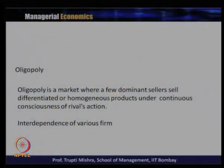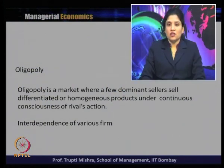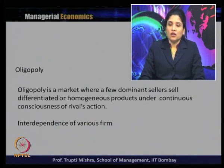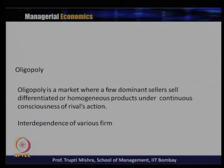Oligopoly is a market with few sellers where they produce either differentiated or homogenous products under continuous consciousness of rival action. The main significant feature of oligopoly is few dominant sellers under continuous consciousness of rival reaction. Whether they produce differentiated or homogenous products, the price and output decision is always decided in relation to what the rival's reaction will be, leading to interdependence among the various firms in oligopoly market structure.